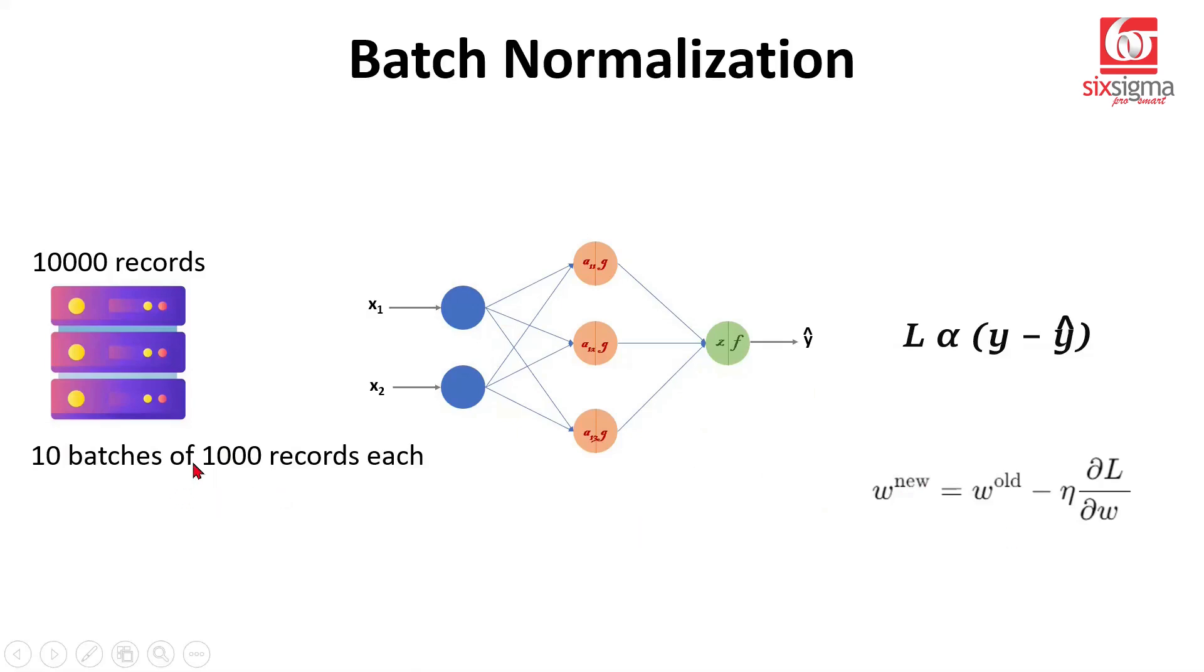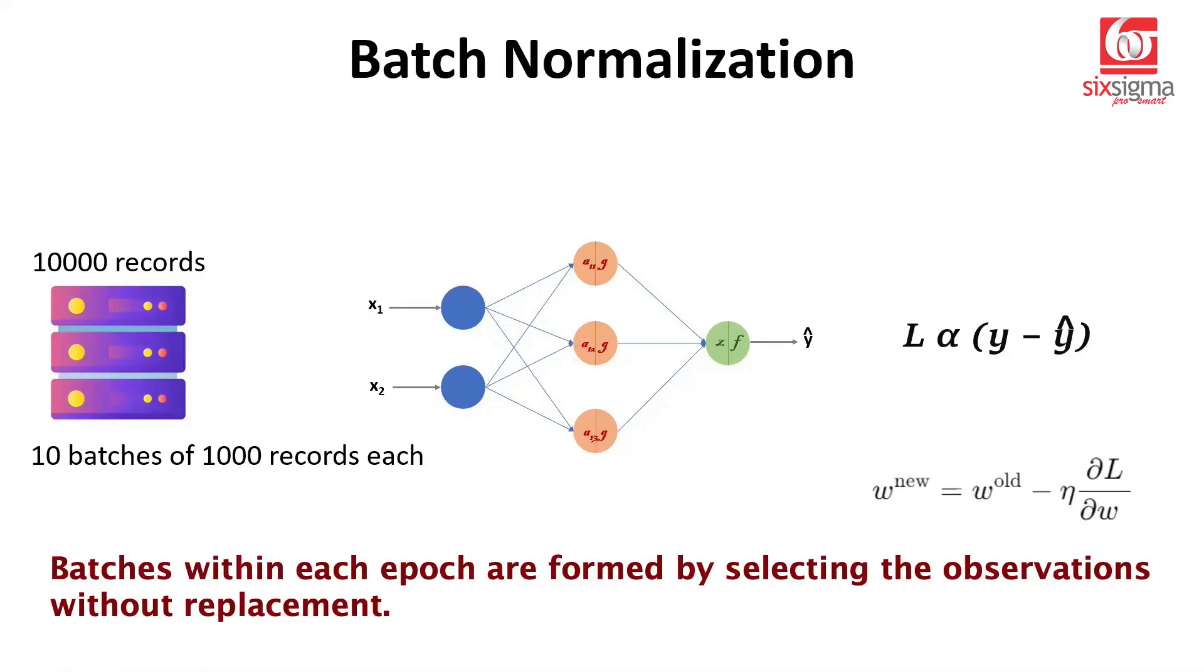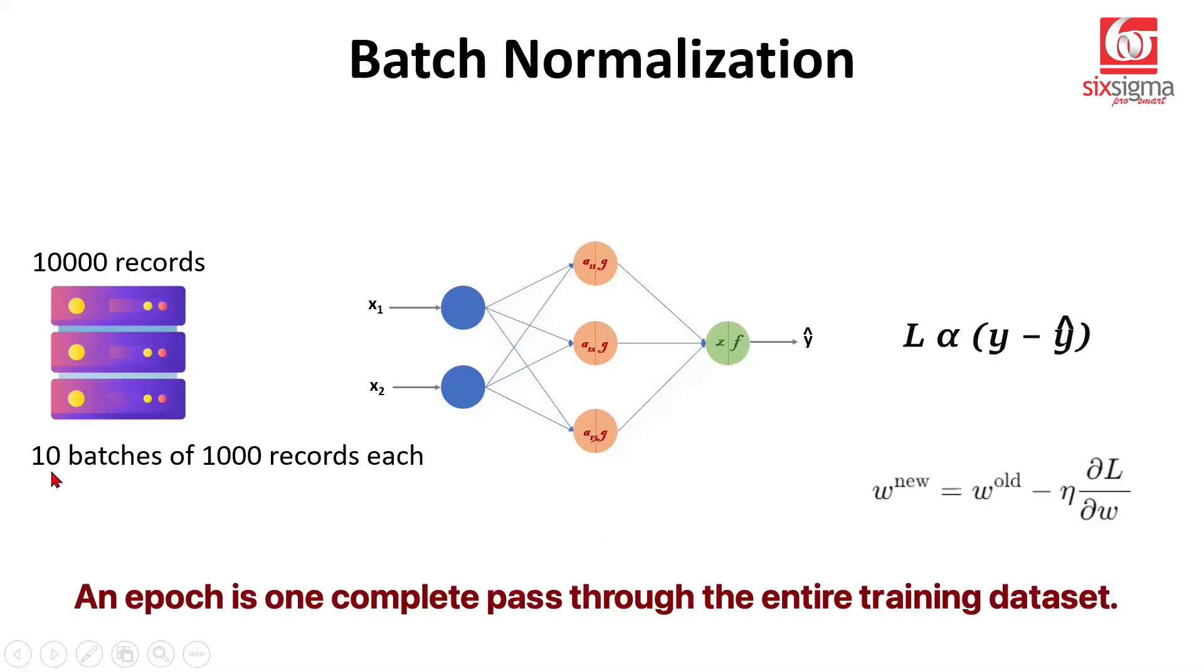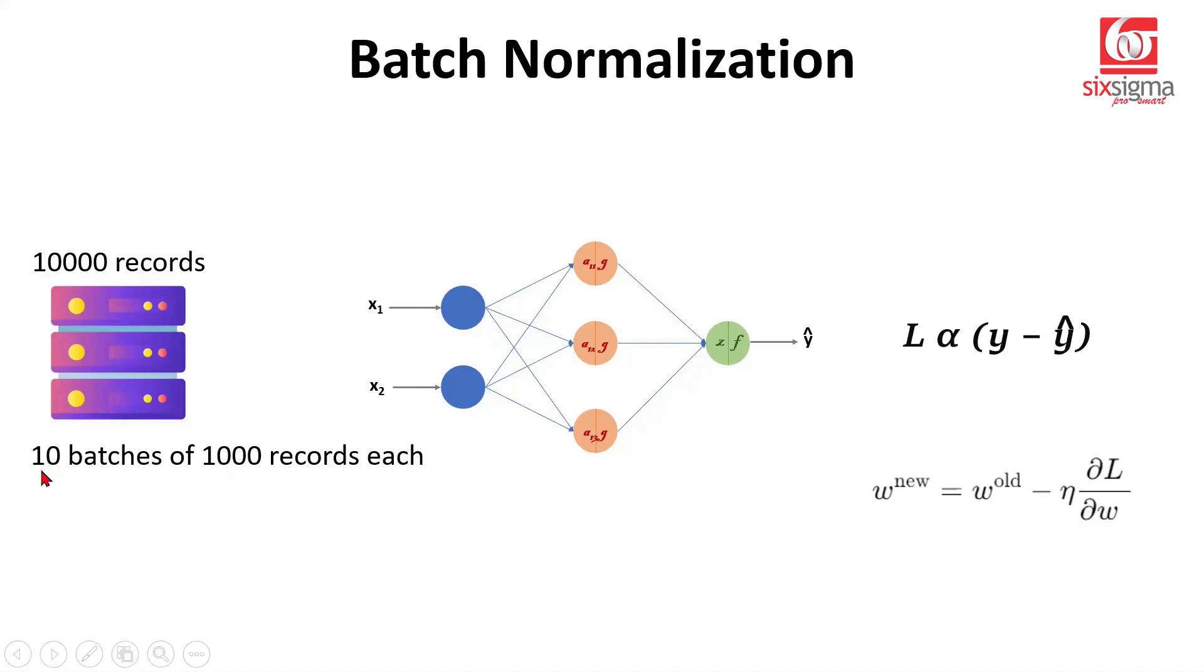Then we take another randomly selected batch and please note there would be no overlap between these batches. So a record that gets selected for a given batch would remain with that batch. When you select the second batch, it would have no overlap with the first batch. And when we complete this entire pass, that is, we pass all 10,000 records in the form of these 10 batches, that's called one epoch. If you choose multiple epochs, you will once again form batches, again randomly selecting 10 batches with 1000 records each. So this process of training is done in the form of batches.